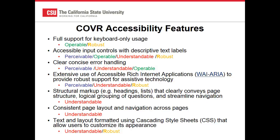Some of the accessibility features of the California Online Voter Registration app include: support for keyboard-only usage, which assures that users with mobility issues and assistive technology users will be able to operate the application. Accessible input controls with descriptive text labels include form fields, radio buttons, and checkboxes that are perceivable, operable, and understandable to screen reader users. Clear, concise error handling allows assistive technology users to easily find and correct errors. The extensive use of Accessible Rich Internet Applications — known as ARIA — provides robust support for assistive technology. ARIA helps screen reader users easily move between regions on a page and provides a way to relate more descriptive content to form controls, which was especially important in areas like the affirmation where screen reader users need to understand everything they are affirming.